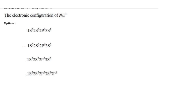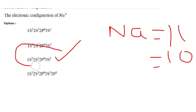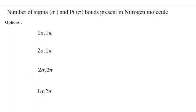The options also included 1s² 2s² 2p⁶ 3s², 1s² 2s² 2p⁶ 3s⁰, and 1s² 2s² 2p⁶ 3s² 3p¹. The sodium atom consists of 11 electrons and the atomic number is 11, but it becomes Na⁺ on losing one electron, so it only has 10 electrons. The configuration with 10 electrons is option C: 1s² 2s² 2p⁶ 3s⁰, so the answer is option 3.